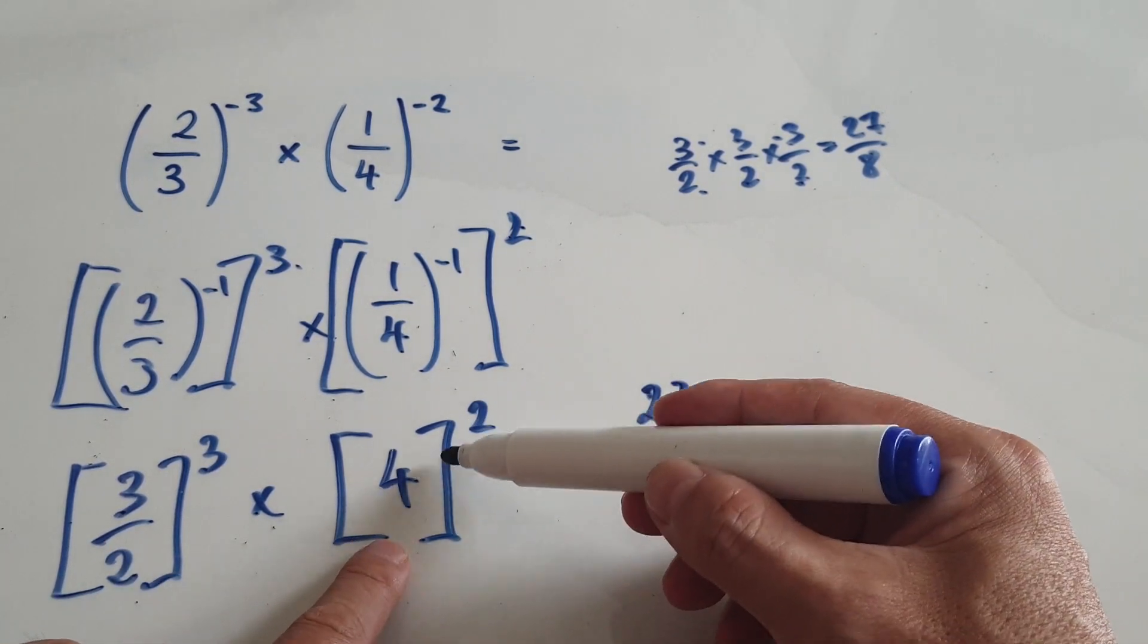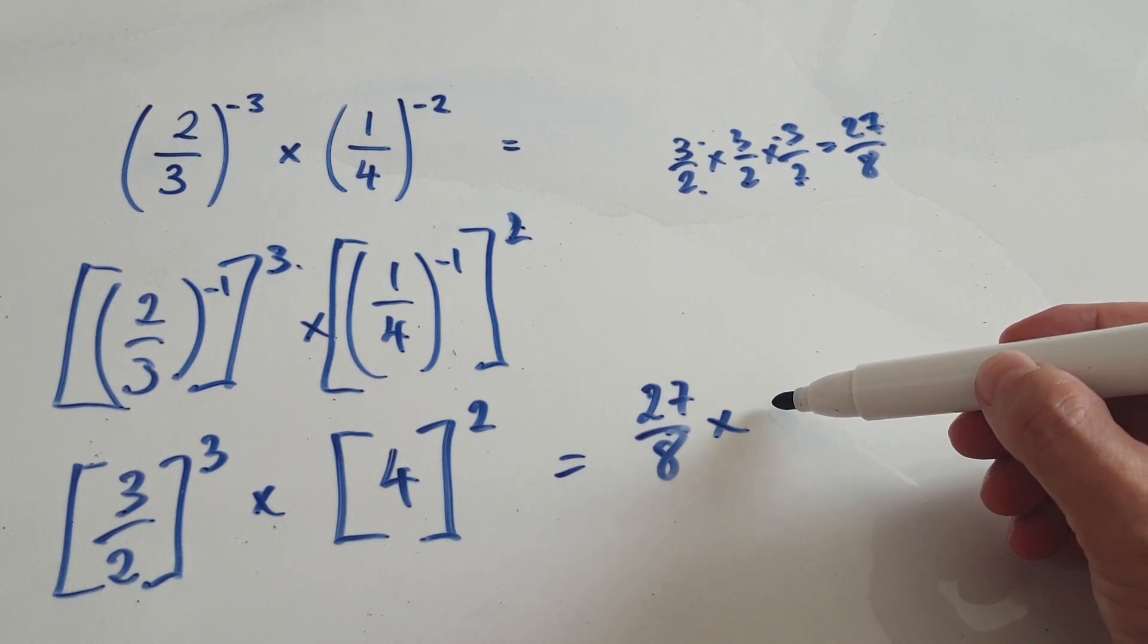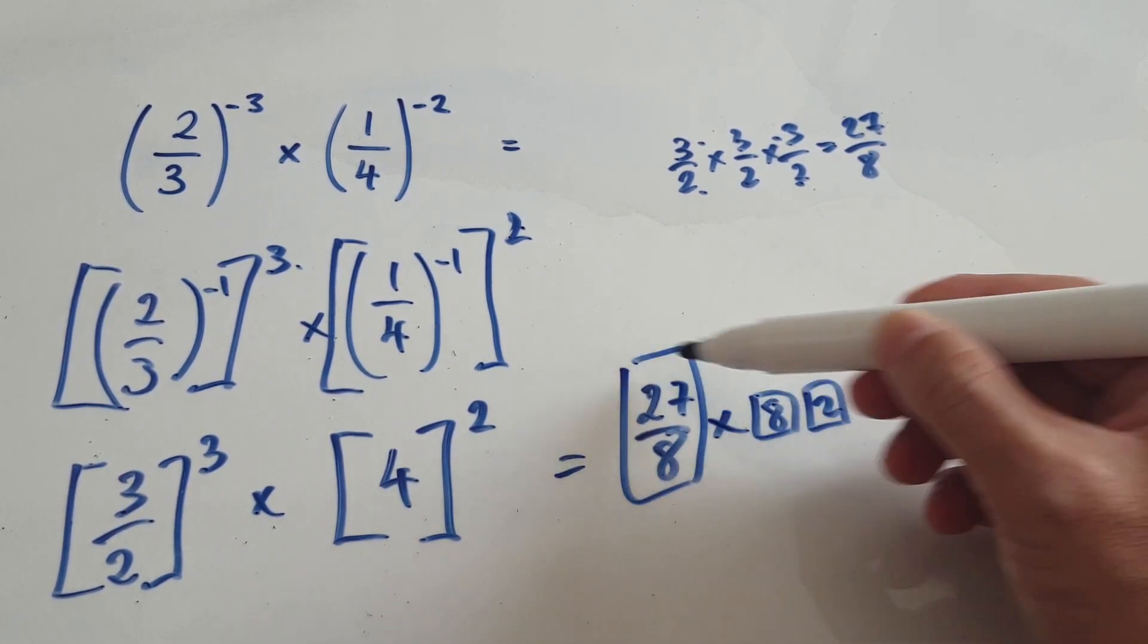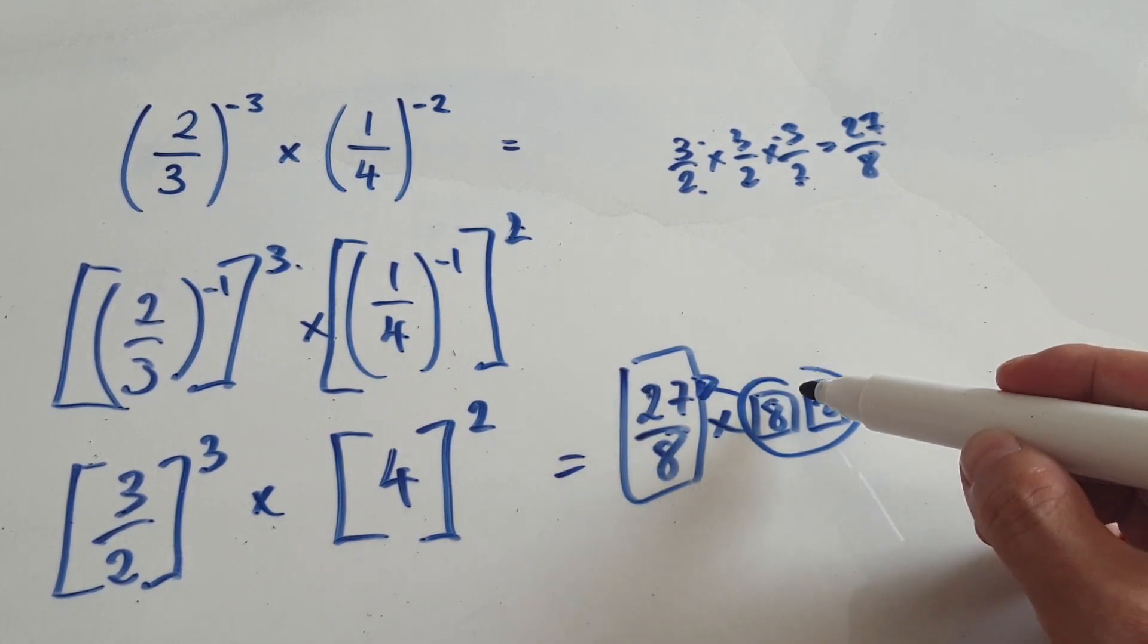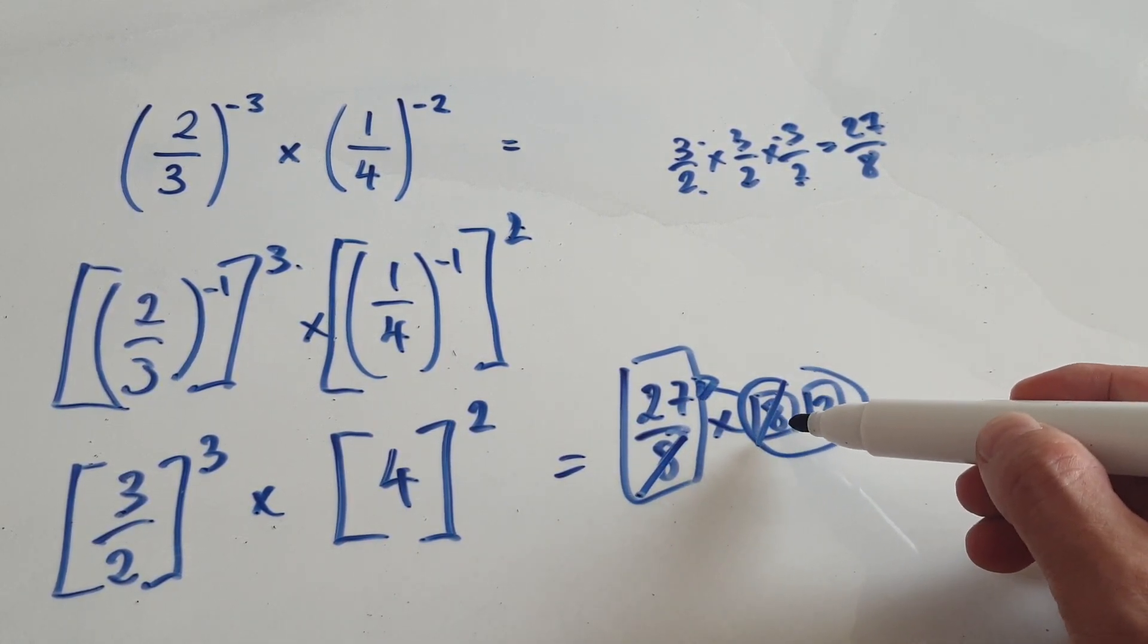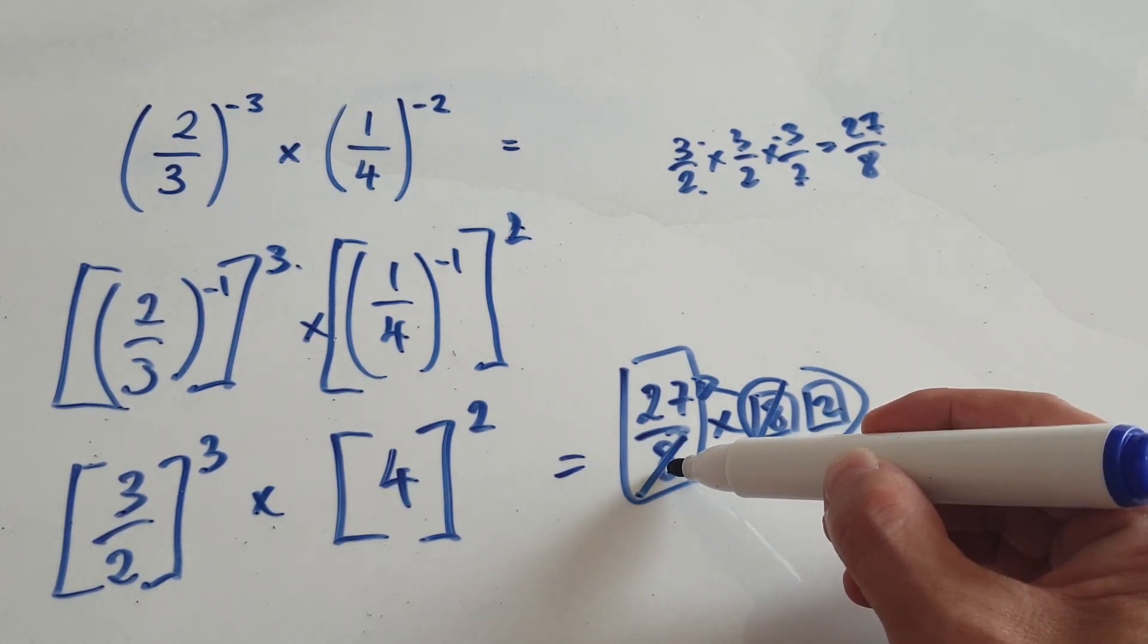And then you times, this is 16. 4 times 4 is 16. But I'm going to visualize it as a block of 8 times a block of 2. Remember, you've got a fraction. This thing here gets multiplied to the top. So now this cancels out with the 8 down here. That's why I visualized the 16 as 8 times 2. Because I know this 8 here will cancel out with this 8.